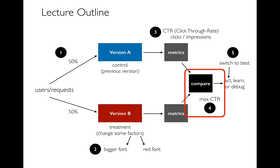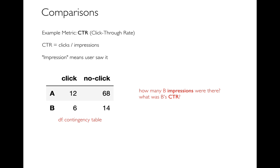Those are the three reasons to do A-B testing. Now let's talk about how we can compare metrics from our two versions. We'll keep using click-through rate — clicks per impressions, where an impression means the user actually saw something and had the opportunity to click. If you're doing this kind of experiment, you can build a contingency table with one row for version A and one row for version B. The columns represent what they did — either they clicked or they didn't. When you did your A-B testing, we kept it pretty even at 50-50, but it's very common to have most traffic on version A and only a small percentage on version B.